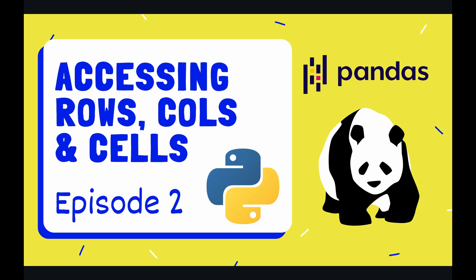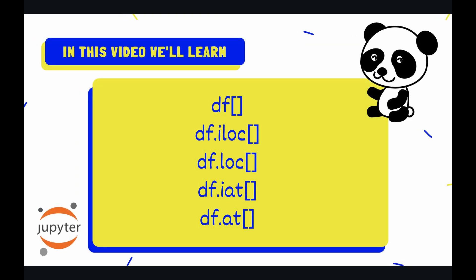Hey coders, welcome to episode 2 of our pandas playlist. In the last episode we learned how to load data into our Python script. In this video we're going to learn how to access the rows, columns, and cells of that data using bracket notation, as well as the methods iloc, loc, at, and iat. So without further ado, let's jump over to the code.